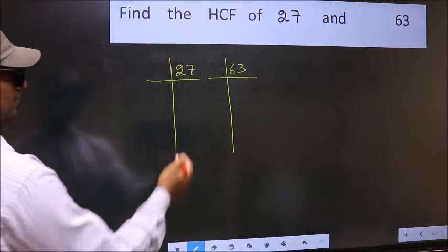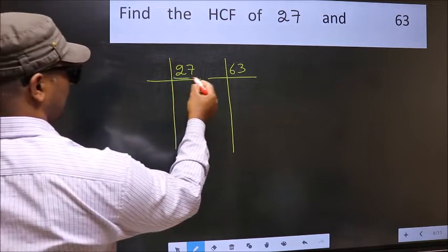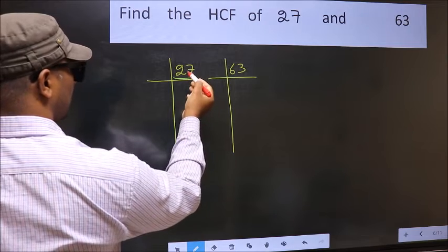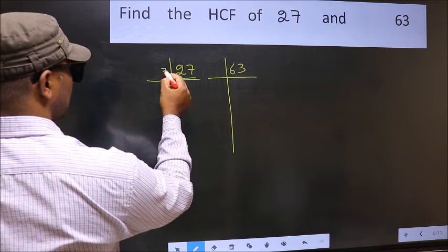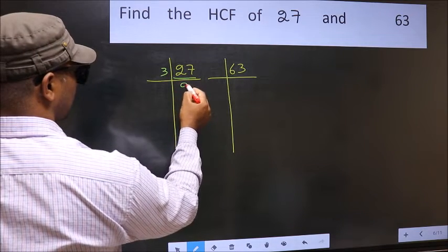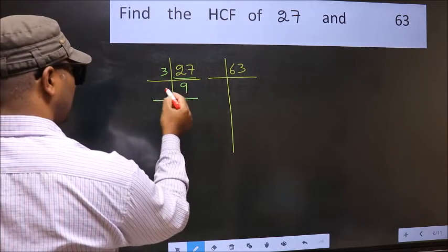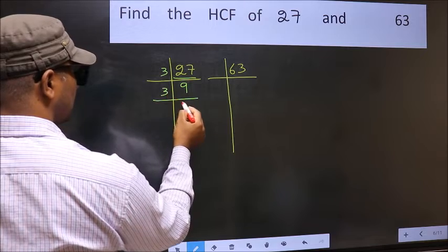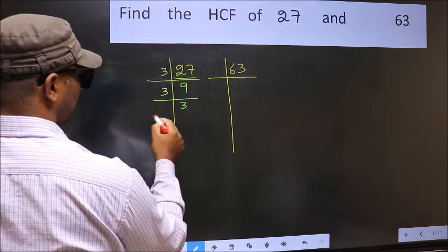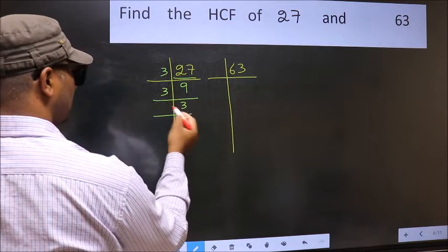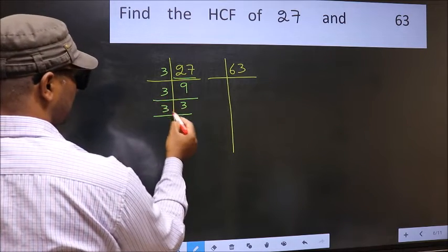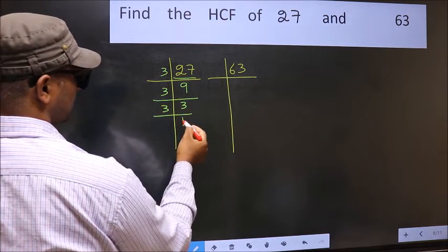Here we have 27. 27 is 3 nines — 3 times 9 is 27. 9 is 3 threes — 3 times 3 is 9. 3 is a prime number, so 3 times 1 is 3.